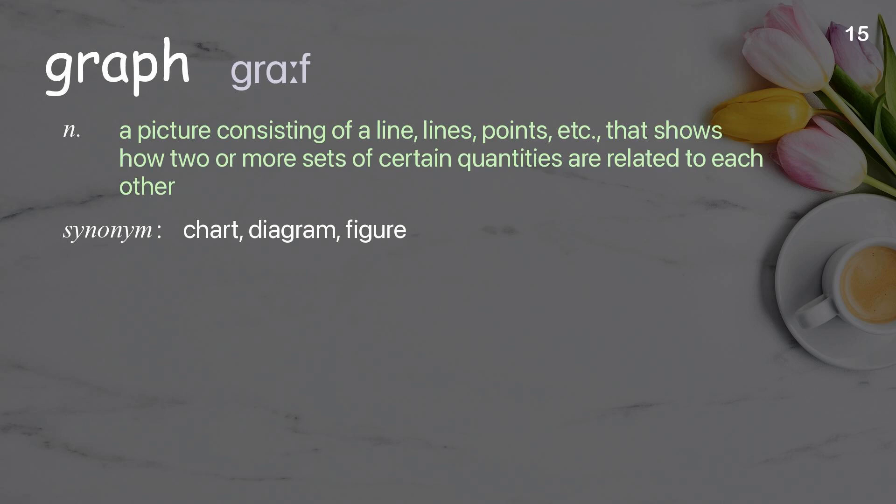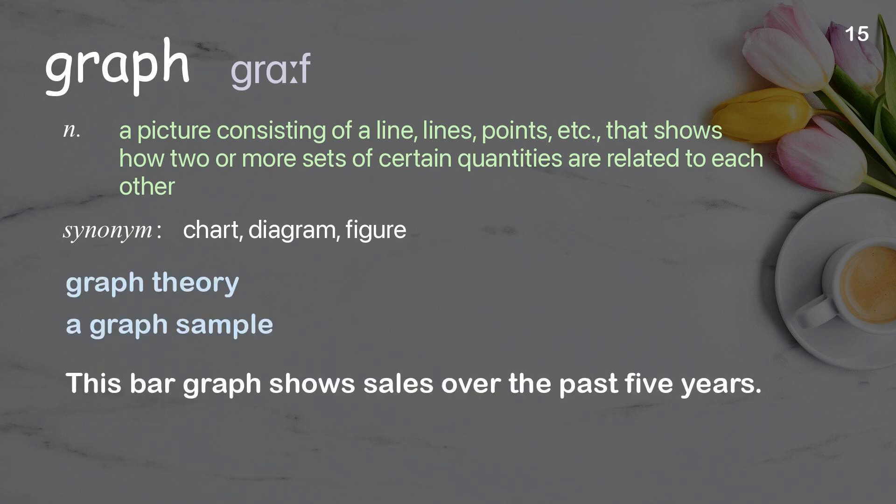Graph: a picture consisting of a line, lines, points, etc., that shows how two or more sets of certain quantities are related to each other. Examples: graph theory, a graph sample. This bar graph shows sales over the past five years.